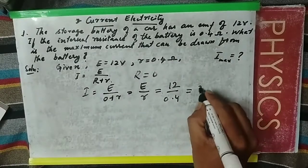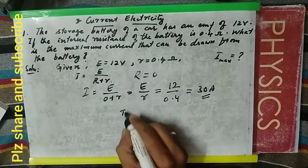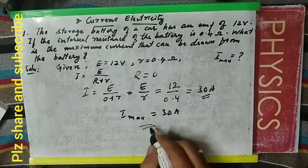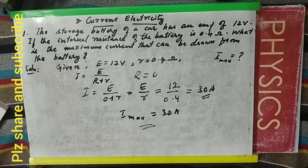...equals 30 amperes. That is the maximum current. I_max = 30 amperes is the final answer. Please share this video with others.